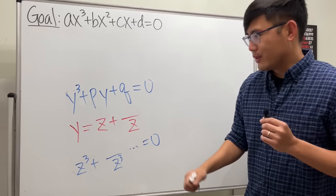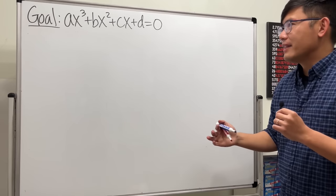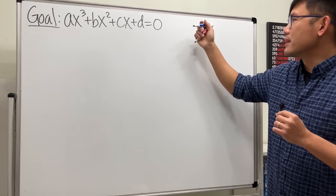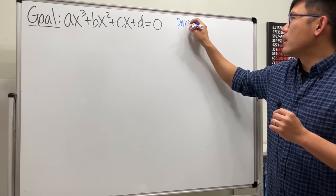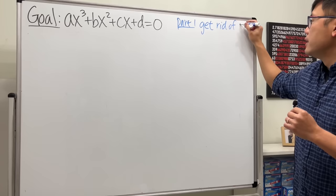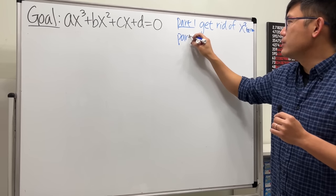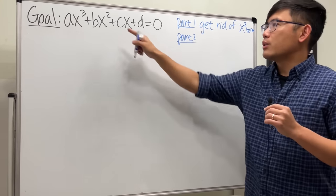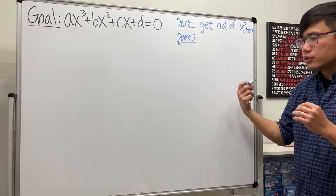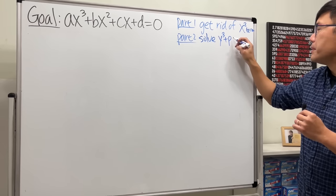So, knowing this, the goal is to get rid of the x² term. I'm going to give you a guideline. There are three parts. Part one: we want to get rid of the x² term — hopefully just some substitution will make that happen.